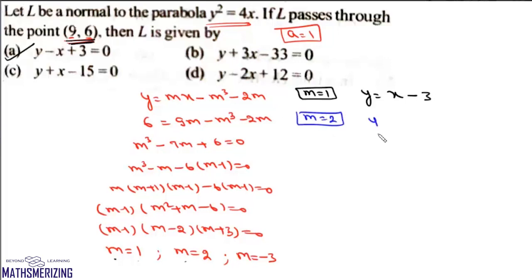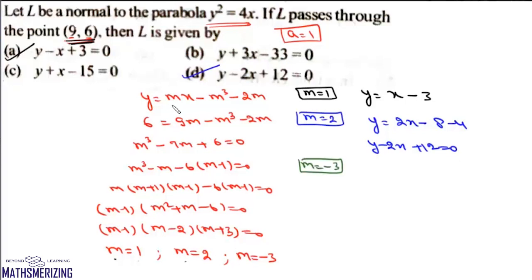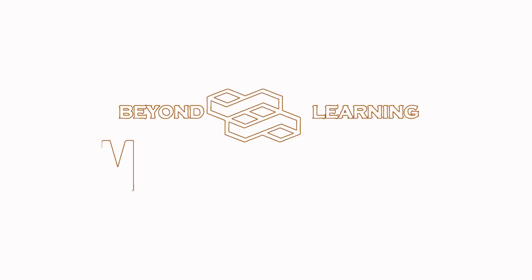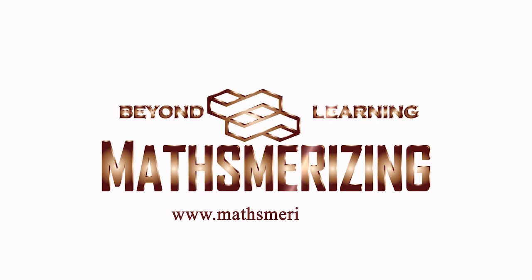For m = -3: y = -3x - (-3)³ - 2(-3) = -3x + 27 + 6, so y + 3x - 33 = 0, which is option (b). The answer to this question is options (a), (b), and (d).